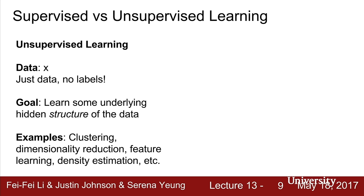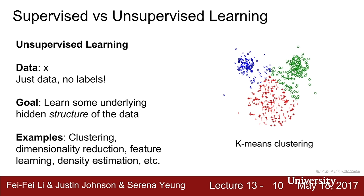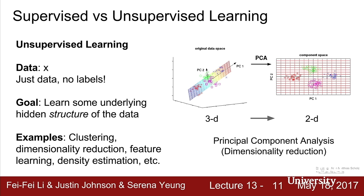In unsupervised learning, we have unlabeled training data and our goal is to learn some underlying hidden structure of the data. An example is clustering, where the goal is to find groups within the data that are similar through some metric, for example K-means clustering. Another example is dimensionality reduction, where we want to find axes along which our training data has the most variation.